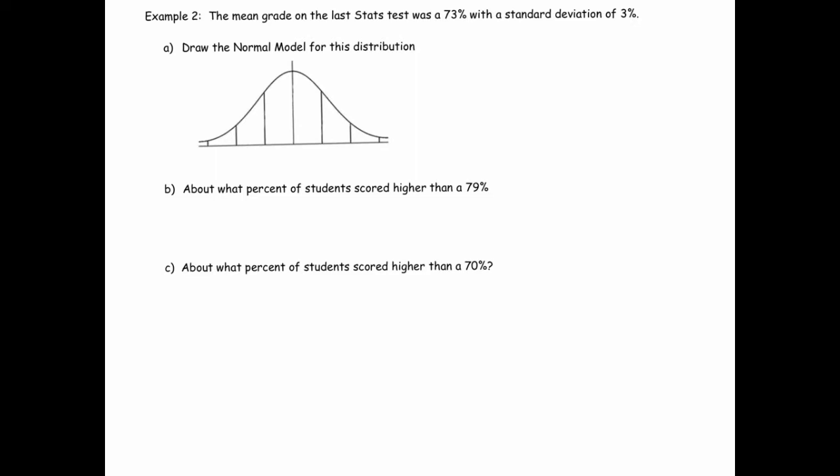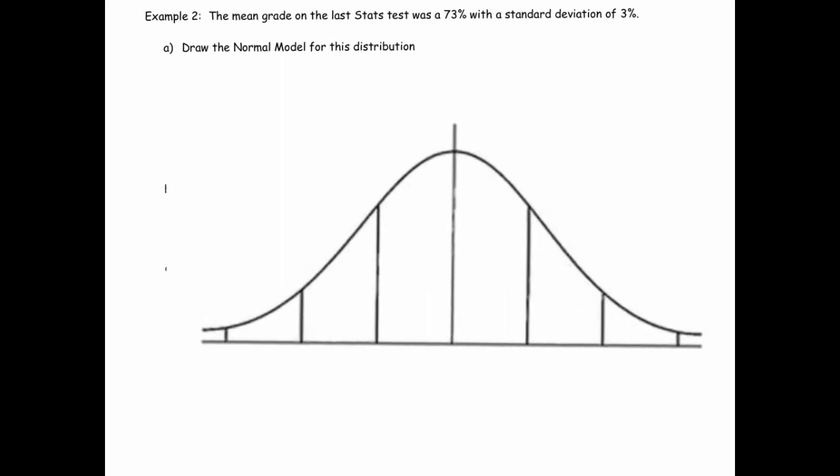The mean grade on the LSAT test was 73% with a standard deviation of 3%. So I'm going to translate that to our normal model here. And we're going to use the empirical rule. So 73% means that's the mean, and if you add one standard deviation, that's 76%.